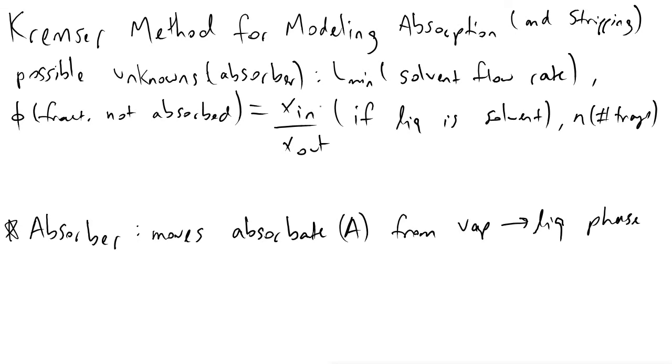And then another variable we will typically have is called little n, and that tells us the number of trays that will be required. And so as with many chemical engineering problems, the main challenge is figuring out when is it appropriate to apply this model to a system that we are examining. The Kremser method is only valid when two conditions are met.